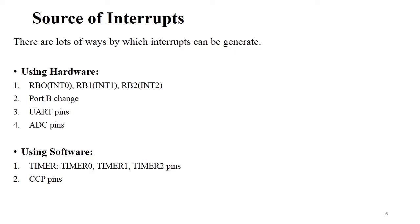There are two ways interrupts are generated: using hardware and using software. In the PIC microcontroller pin diagram there are 40 pins and 5 ports. Port B generates interrupts, and pins RB0, RB1, and RB2 handle interrupts INT0, INT1, and INT2. The PIC18 microcontroller has three interrupt pins. There are also UART pins and ADC analog-to-digital converter pins that generate interrupts. Using software, there are timers — Timer 0, Timer 1, and Timer 2 — and CCP pins for capture, compare, and pulse-width modulation, which also generate interrupts.